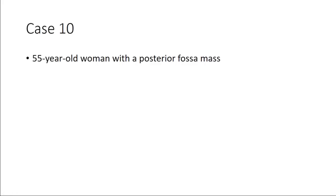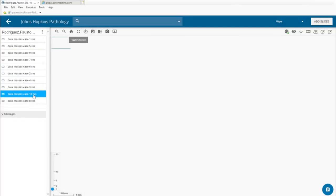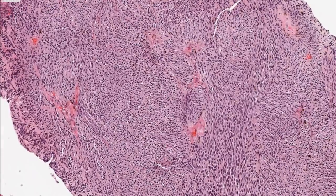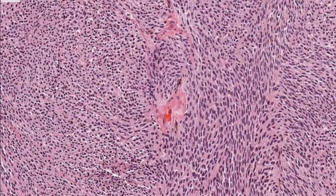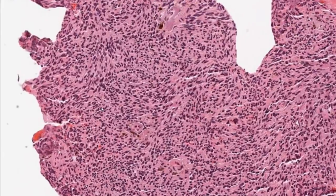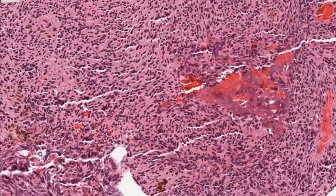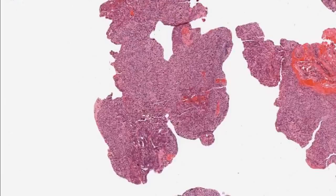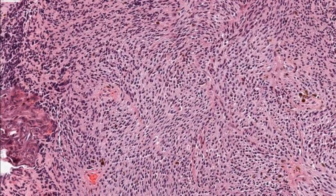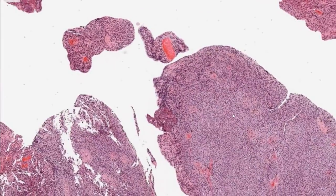The last case is a 55-year-old woman with a posterior fossa mass. We have another spindle cell tumor — these often present as a dural-based mass or involve the leptomeninges and can involve the spine. A subtle clue here is that there is pigment, but almost no proliferation. It is very spindly with very low proliferative activity. A few stains were done.